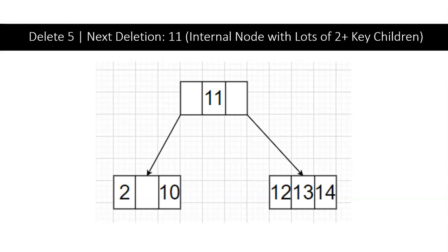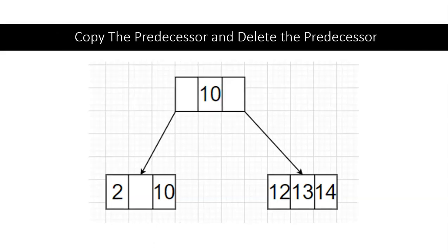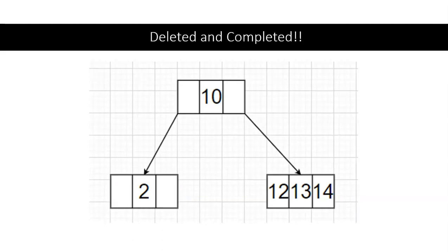Lastly, we're going to be deleting 11. It is an internal node and since the left child has two keys, we can copy the predecessor and then delete the predecessor afterwards. Thus, completing all of our deletions.